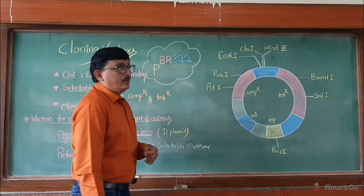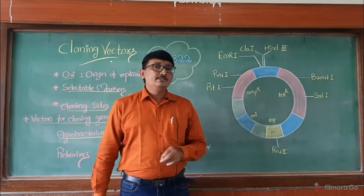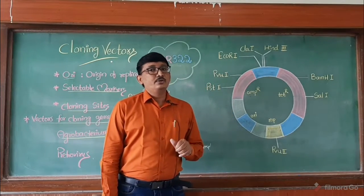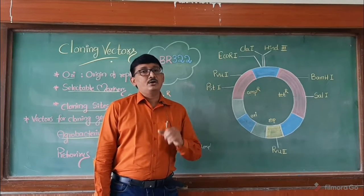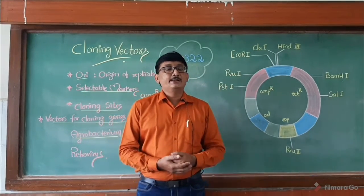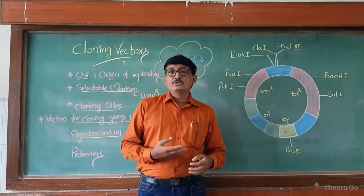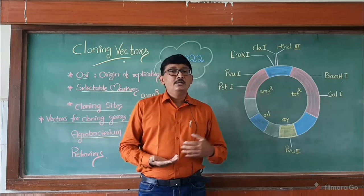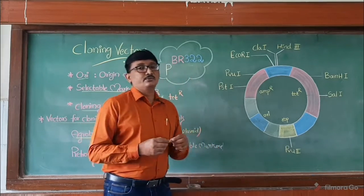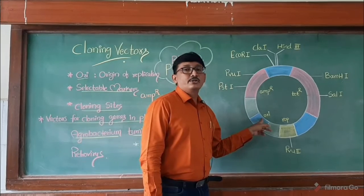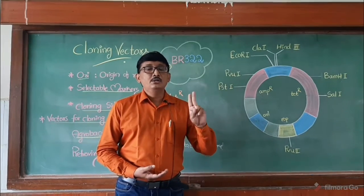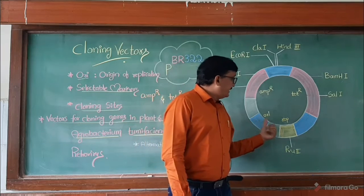First, you can see the ORI region. ORI means origin of replication. It is one of the very important parts of PBR 322. When we introduce this plasmid into a host organism, the host cell multiplies and along with it this plasmid and rDNA should also multiply. Replication starts from this point, known as origin of replication. ORI also controls the copy number.